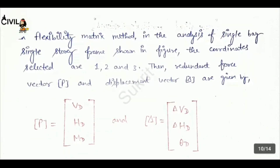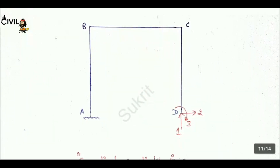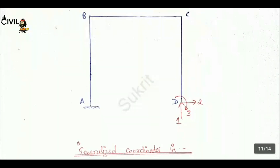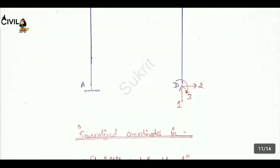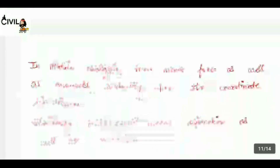For the flexibility matrix method, in the analysis of a single-bay single-story frame, the coordinates selected are 1, 2, and 3. The relevant force vector P is given by V_D, H_D, and M_D, and the displacement vector delta is given by delta_V_D, delta_H_D, and theta_D. This is the generalized coordinates in the flexibility matrix approach.